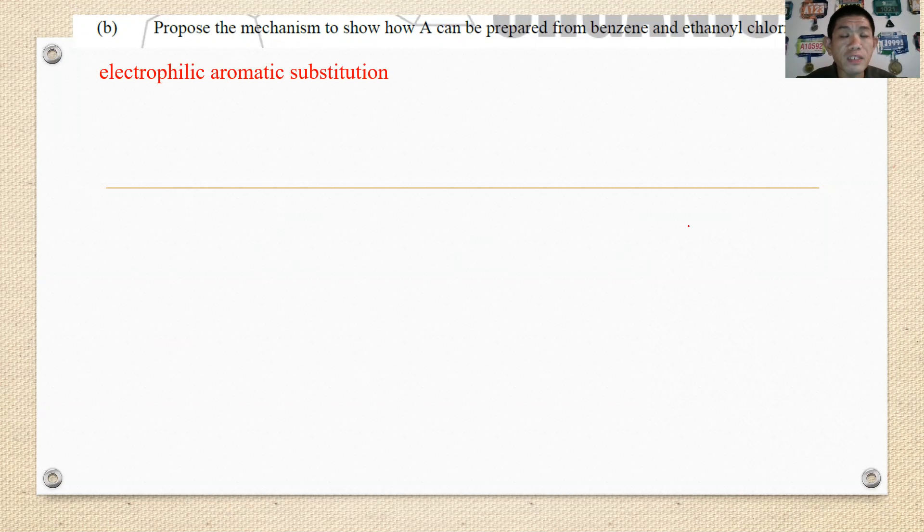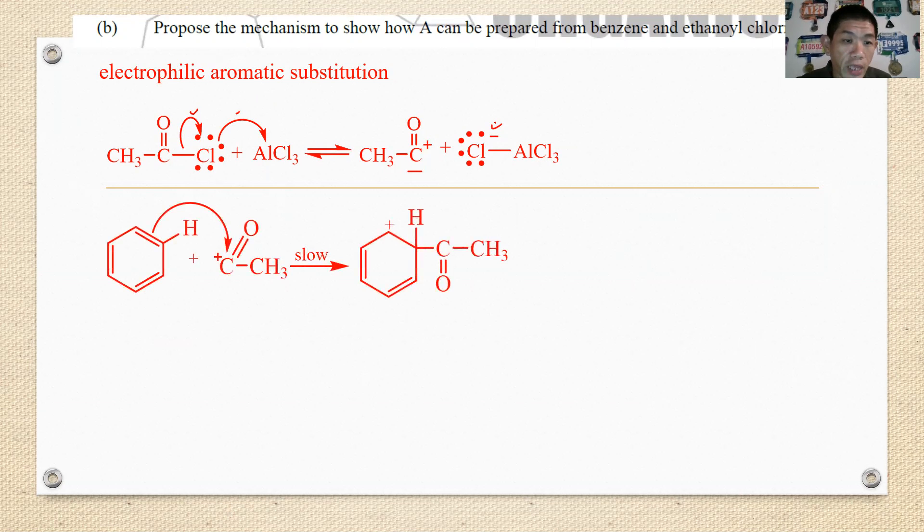The first step of the mechanism is how does the electrophile is first formed, so by using the catalyst of AlCl3 it undergoes heterolytic fission to form a strong electrophile of this carbonyl cation, and then you form the intermediate of tetrachloroaluminate ions. Then the carbonium cation will attack the benzene ring.